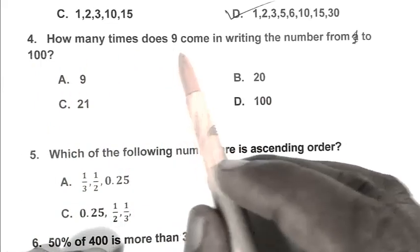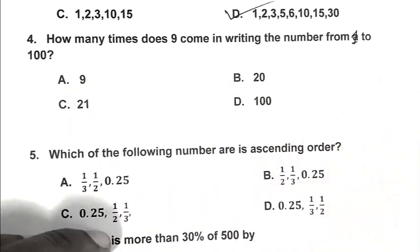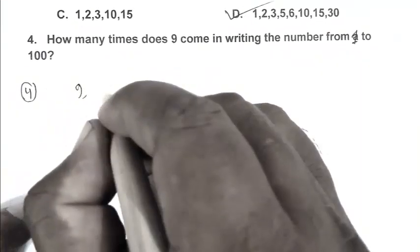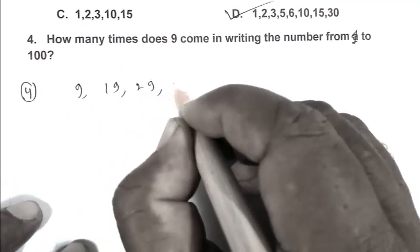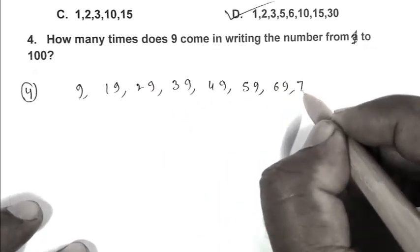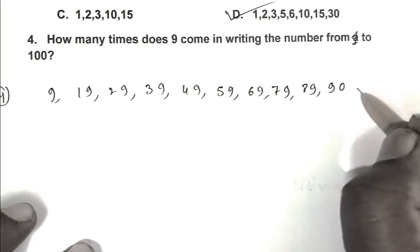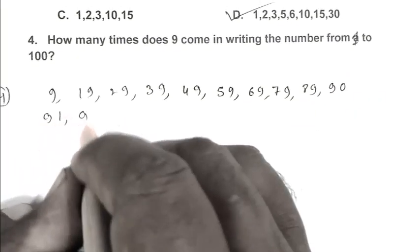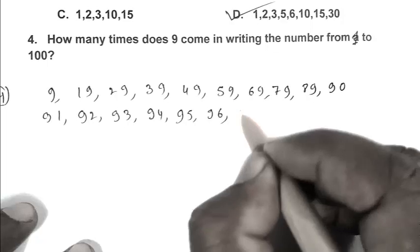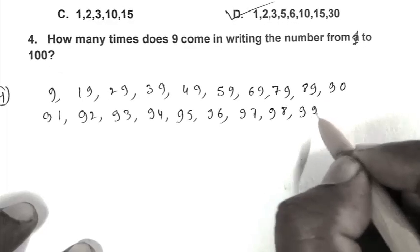Question number 4. How many times does 9 come in writing the numbers from 1 to 100? First 9 comes in 9, after that 19, 29, 39, 49, 59, 69, 79, 89, then 90, 91, 92, 93, 94, 95, 96, 97, 98, and 99.